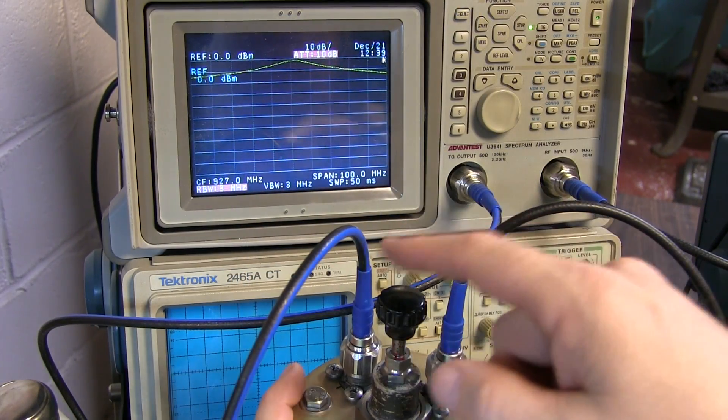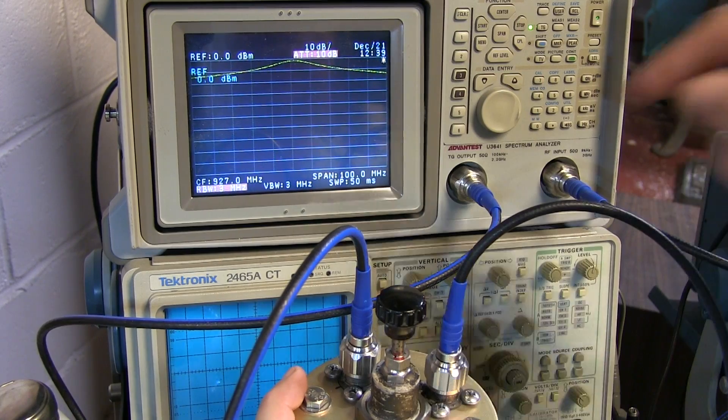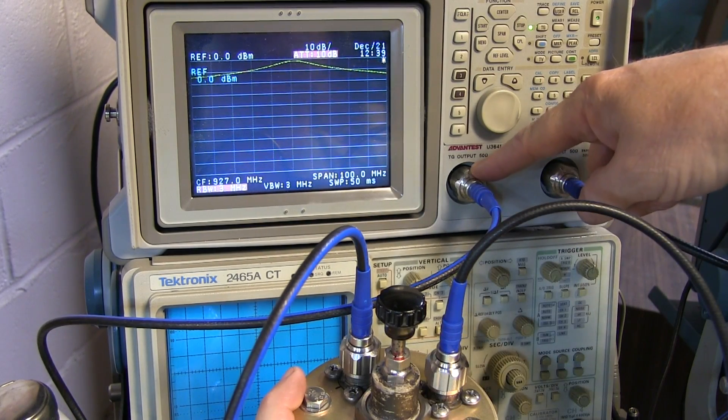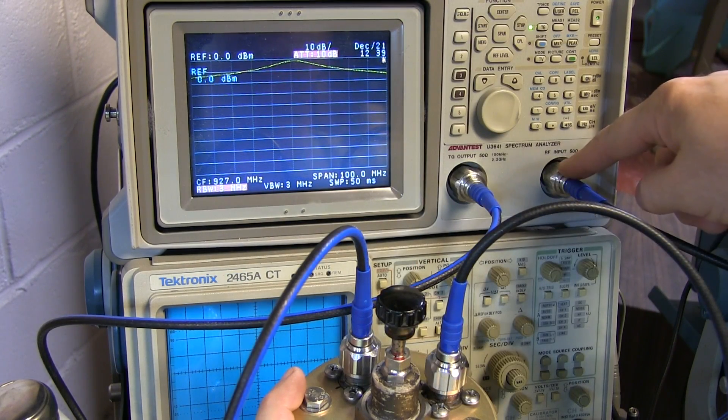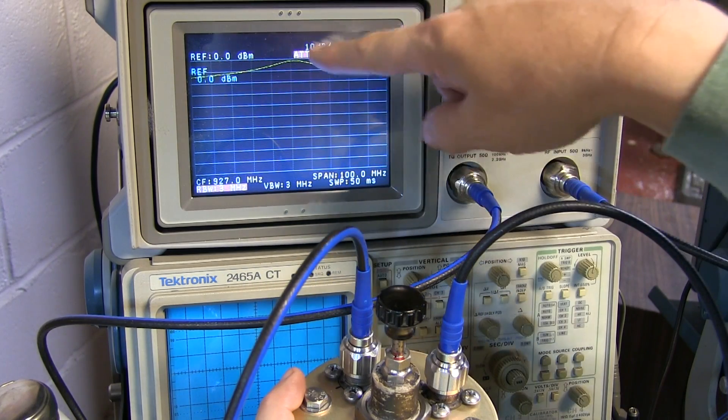Now I've started off here just by making the transmission loss measurement by taking the tracking generator output, going into the input of the filter, and taking the output of the filter and going back into the spectrum analyzer, and we can see the bandpass characteristic.